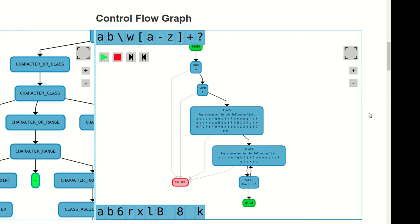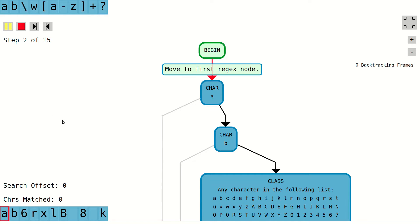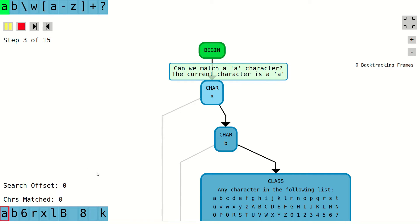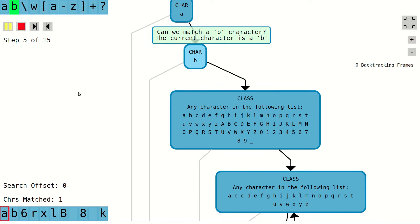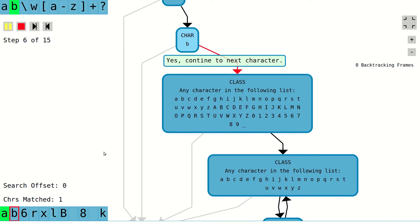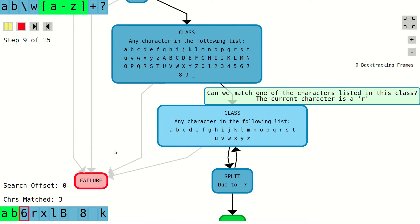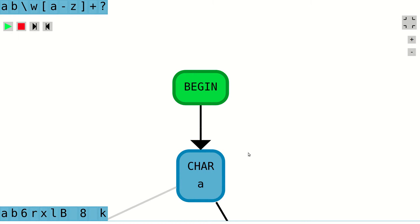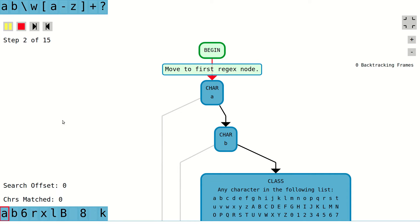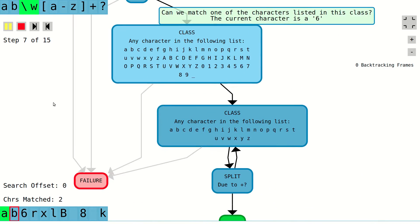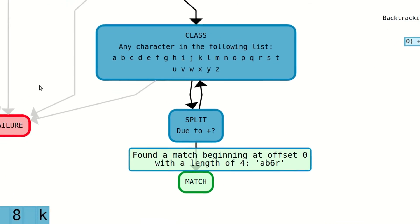The second diagram shows a control flow graph corresponding to your regular expression. This control flow graph illustrates the step-by-step process that is undertaken whenever your regex is matched against a piece of text. When attempting to match your regular expression, the process starts at the begin node and ends at either the match node or the failure node. Any path from the begin node to the match node corresponds to a piece of text that matches your regular expression.